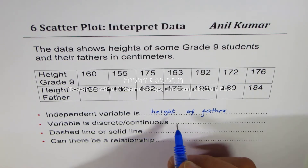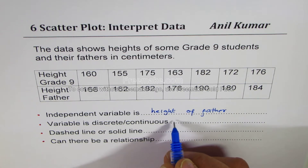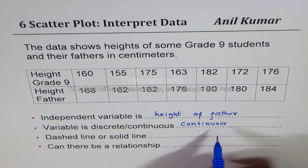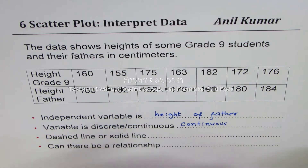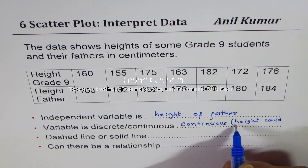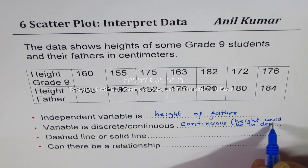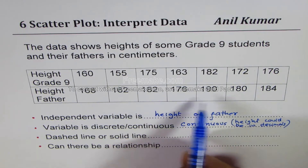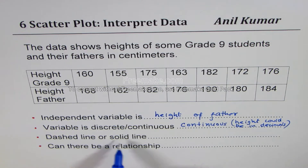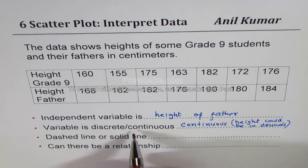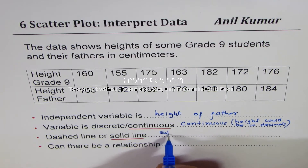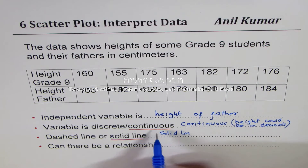Second question — are the variables discrete or continuous? You can have height in decimals, so it is continuous. The variable is continuous because heights could be in decimals, not just discrete numbers as shown in the table. Since we know it is continuous, solid lines make sense.